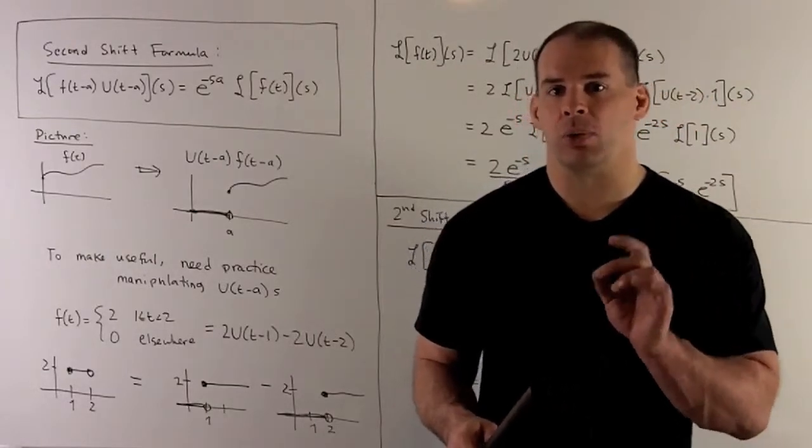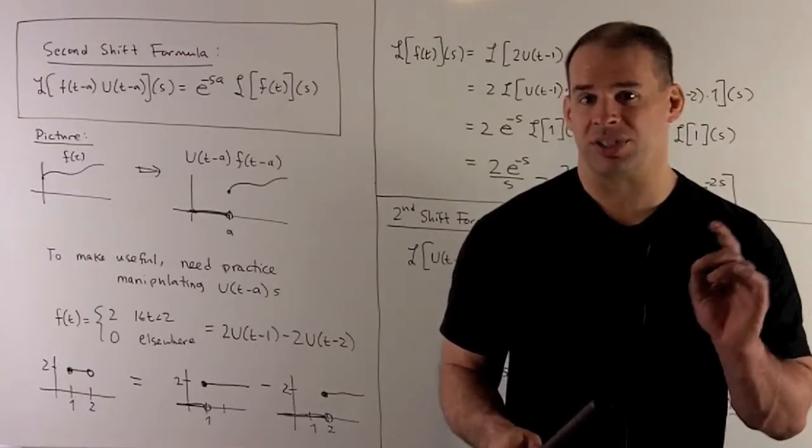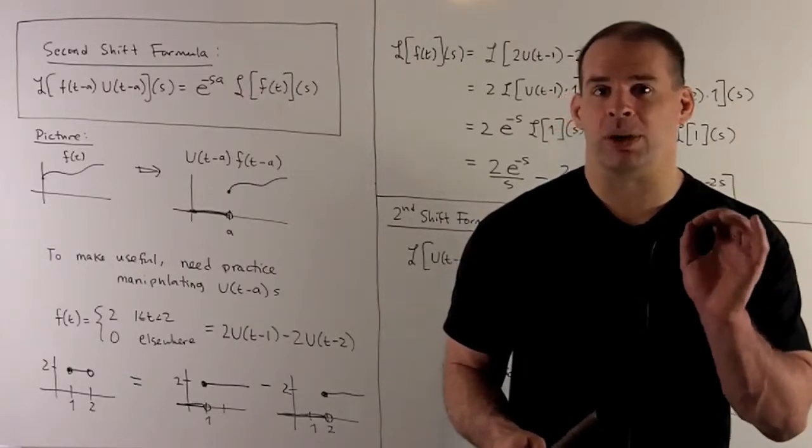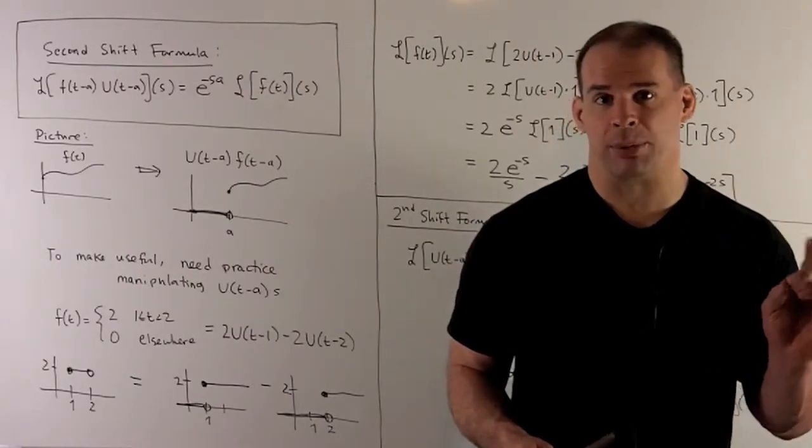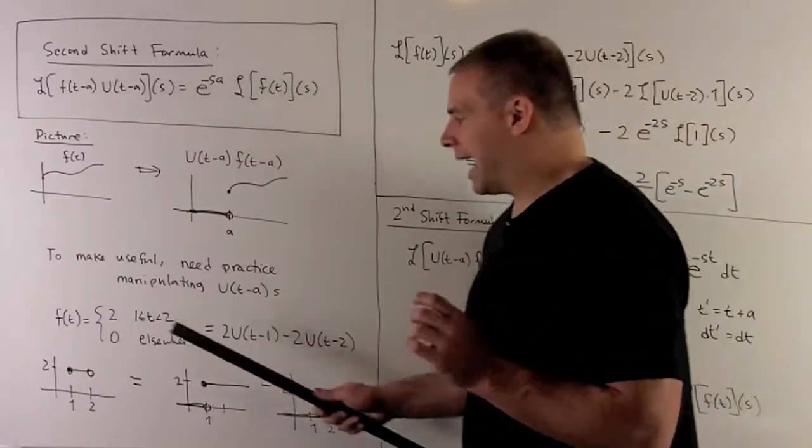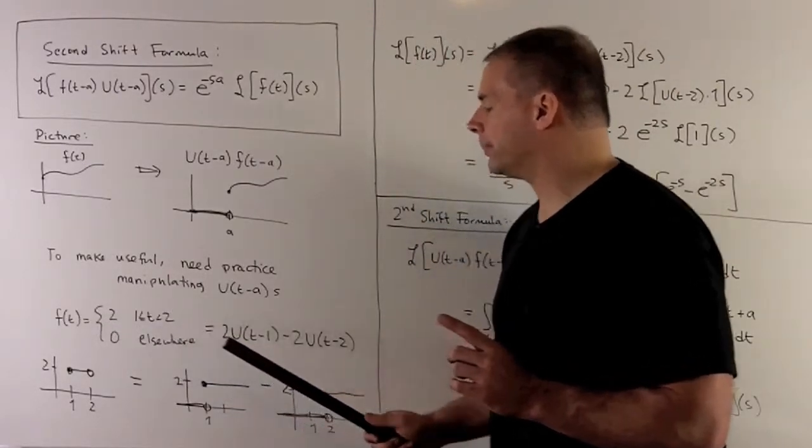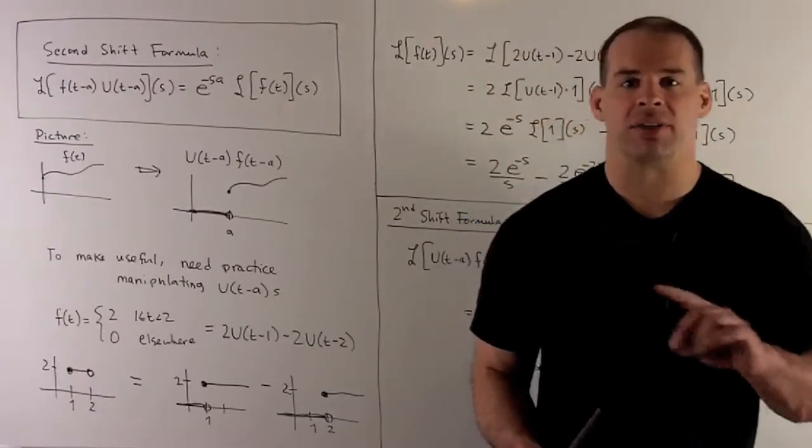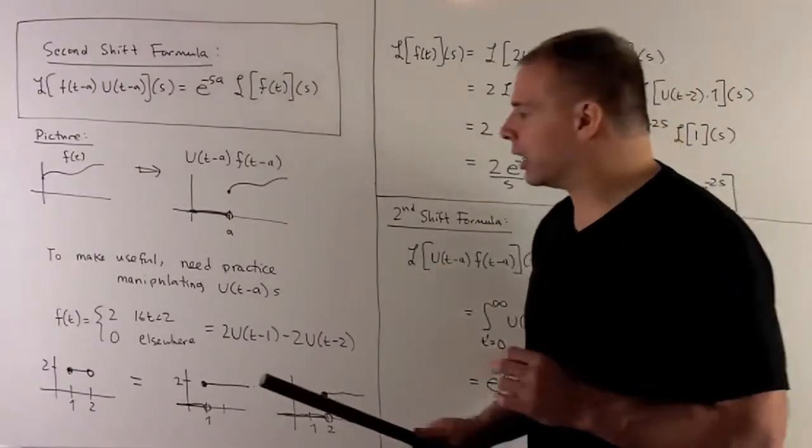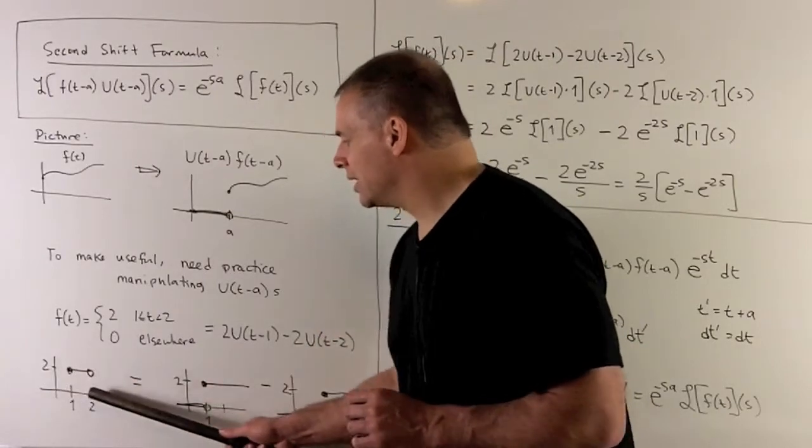Okay. Now, if we want to get good with the second shift formula, we want to get good at manipulating these shifted unit step functions. So, in our case here, not going to be too complicated, but we want to work with more complicated examples later on. So that's what's coming up. Now, for here, what are we looking at? I have f of t equal to two between one and two and then zero elsewhere. So the idea is we just want to write this as a sum or difference of shifted unit step functions. So what do we have here? Well, if you note, what do we have? Between one and two, we're at two. I want zero to the left, zero to the right.